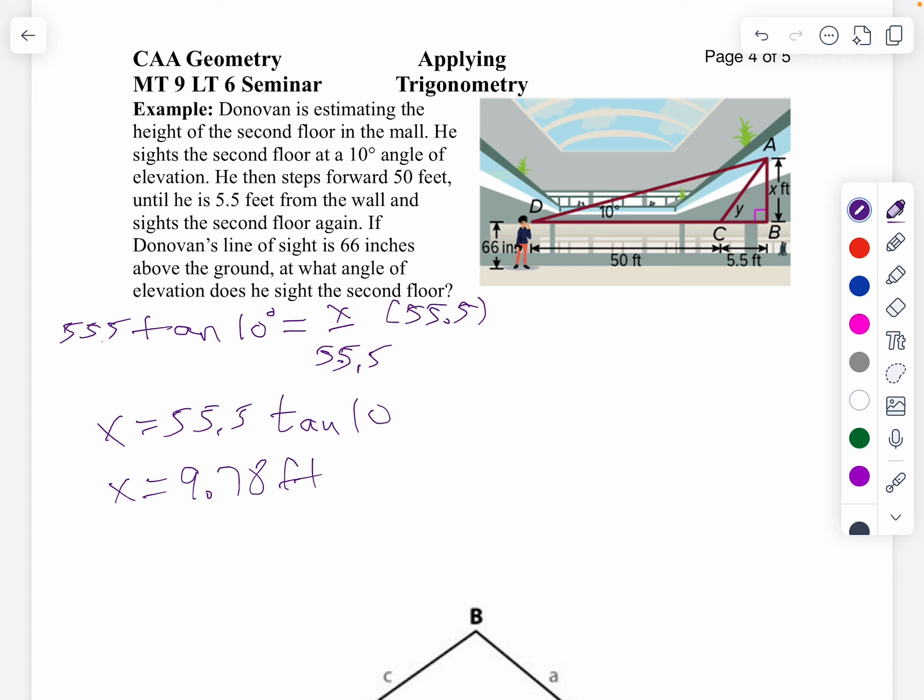Now I want to say the tangent of y equals the opposite, which is x or 9.78, over my adjacent, which is 5.5. In other words, the measure of angle y is going to be the inverse tangent of 9.78 over 5.5.